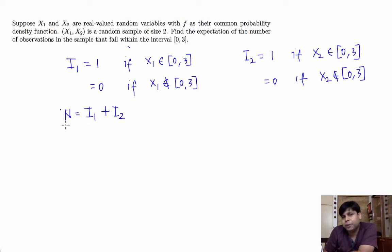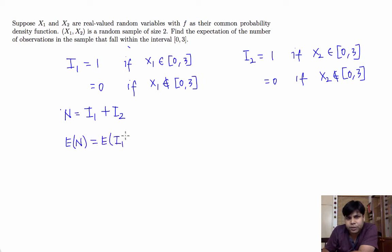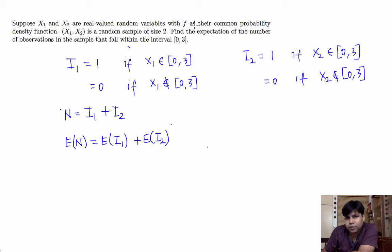To find the expected value of N, we can simply use linearity of expectation. So the expected value of N equals the expected value of i1 plus the expected value of i2. Since x1 and x2 have the same distribution and are distributed according to the density function f, the expected value of i1 will be equal to the expected value of i2.